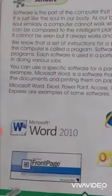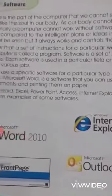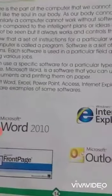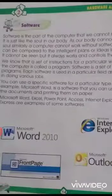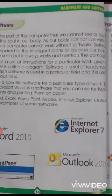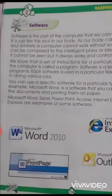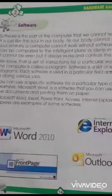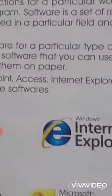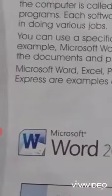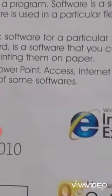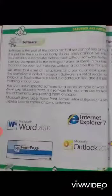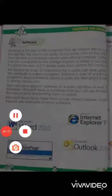For example, Microsoft Word is a software that you can use for typing documents and printing them on paper. Microsoft Word, Excel, PowerPoint, Access, Internet Explorer, and Outlook Express are examples of some software. These are all types of software.